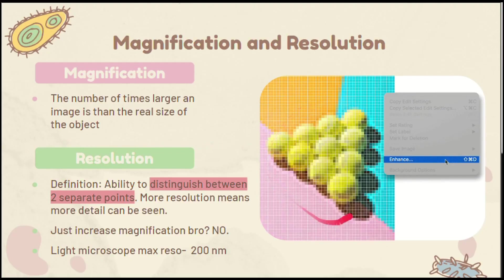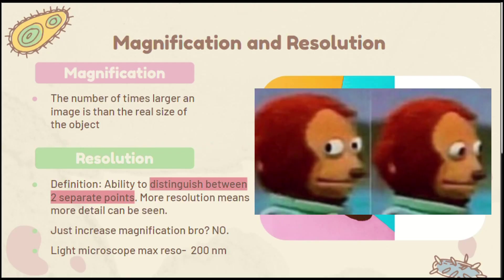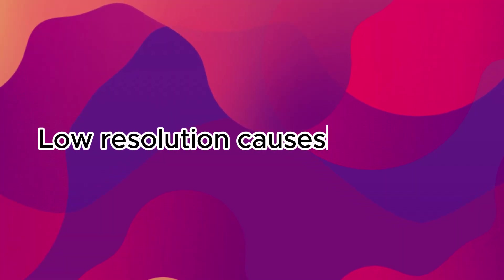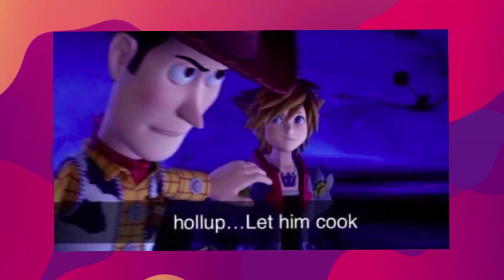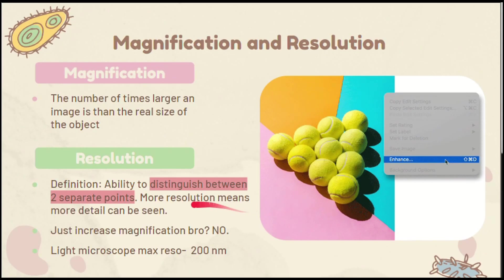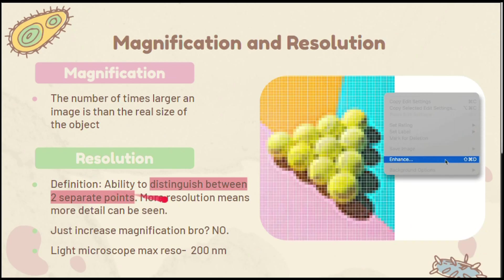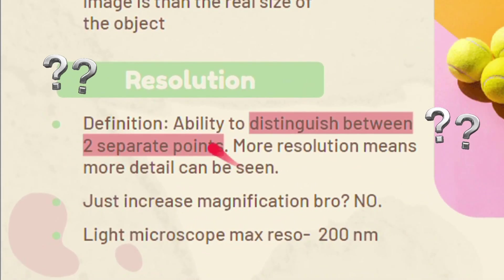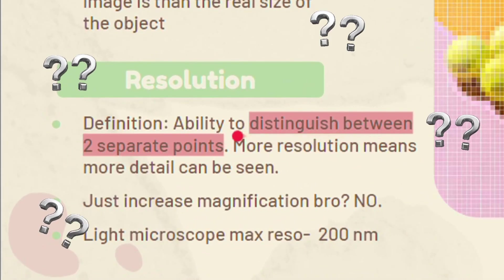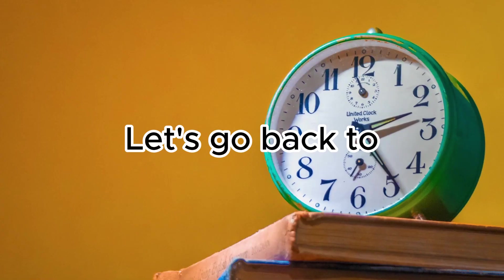Other than ruining your illegally streamed movie quality, low resolution causes a problem when you deal with microscopes actually. Why is resolution defined as the ability to distinguish between two separate points when we're talking about microscopes?